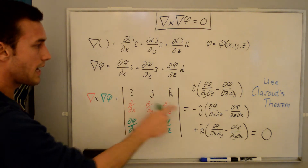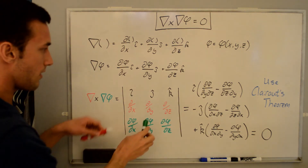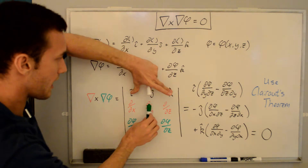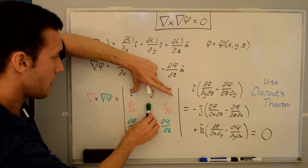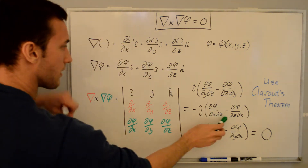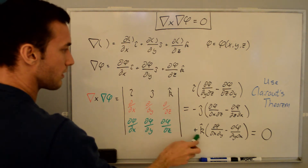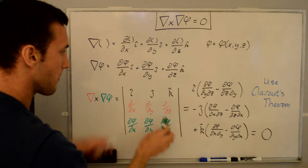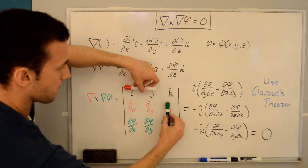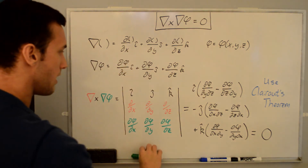For j, we're going to have a negative in front, eliminating the i and k rows and columns, and we take this times this minus this times this — that gives us the j term. Then we have plus the k-hat direction, getting rid of the corresponding row and column, and we end up with this times this minus this times this.